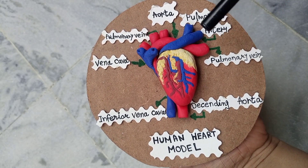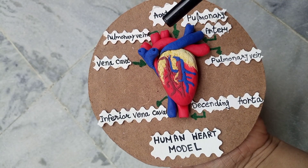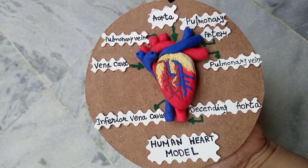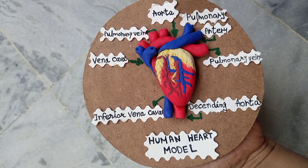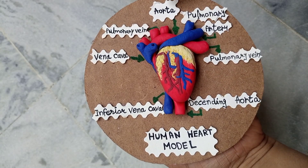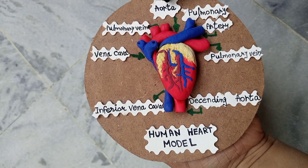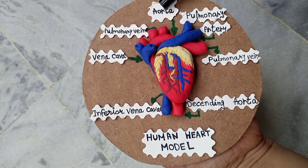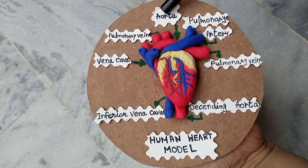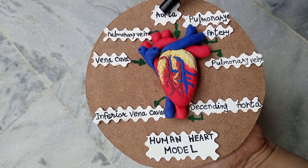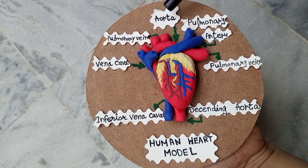Number one is arteries. Here is the big aorta — this is called the aorta. Red arteries carry oxygen and nutrients away from your heart to your body's tissues.